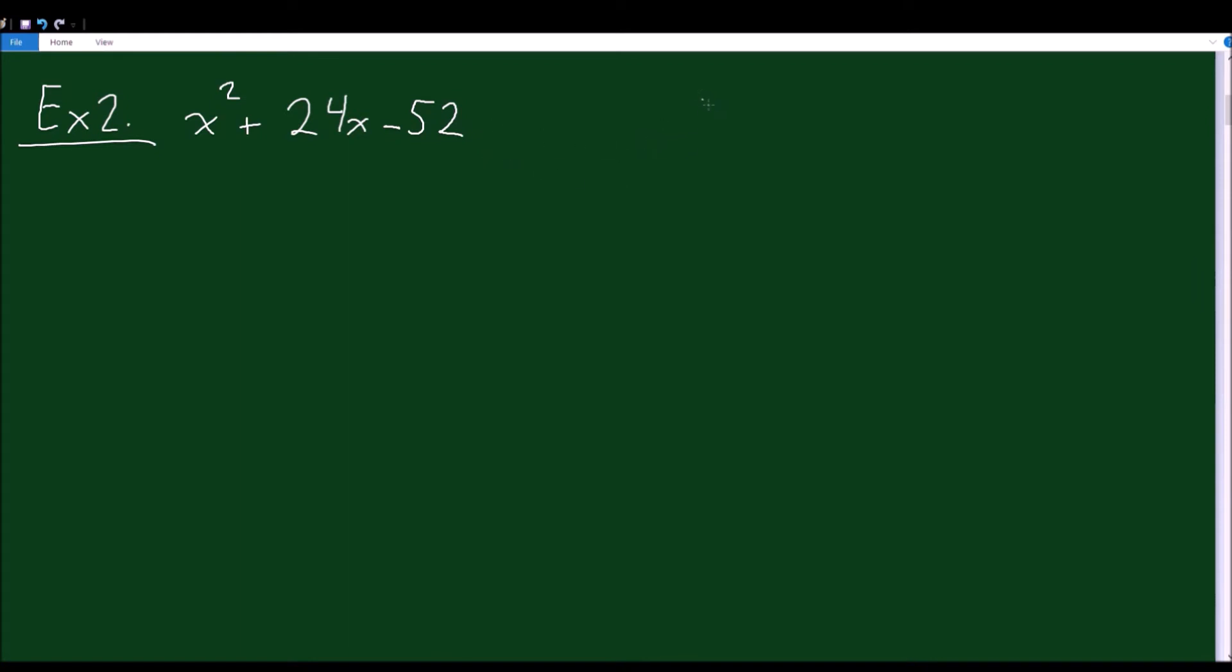So what do you think? What multiplies to -52? We could have 52 times -1, but if we add these together, we're not going to get anywhere close to 24. We could have, well, what's half of 52? We could have 26 times -2. Would that work? 26 times -2 is -52. And 26 plus -2 will give you 24. So yeah, these are going to be our numbers: 26 and -2.